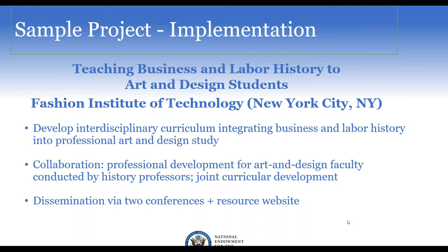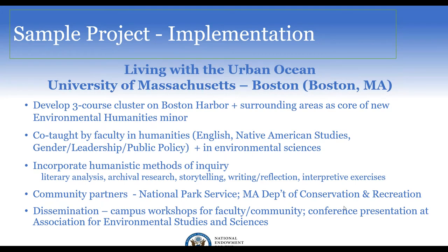Another implementation project, Living with the Urban Ocean, comes from University of Massachusetts Boston, a large public research university. They developed a three-course cluster on Boston Harbor as the core of a new environmental humanities minor, co-taught by faculty in English, Native American studies, gender leadership and public policy, and environmental sciences. It incorporated humanistic methods — literary analysis, archival research, storytelling, writing and reflection — with community partners including the National Park Service.